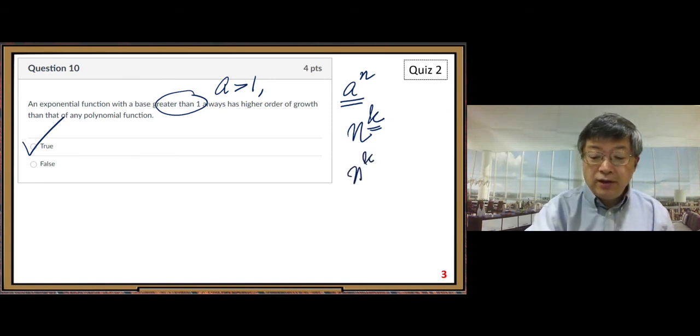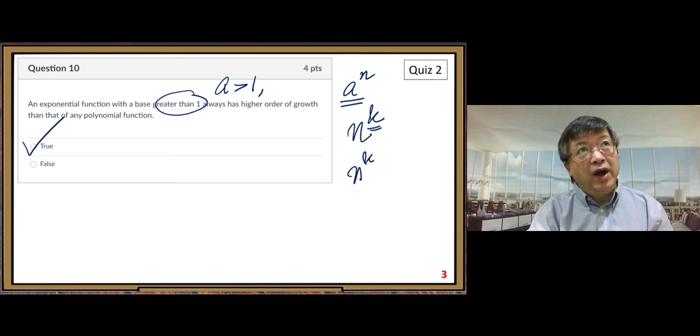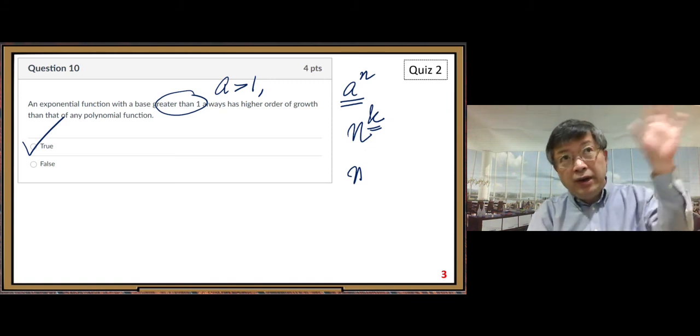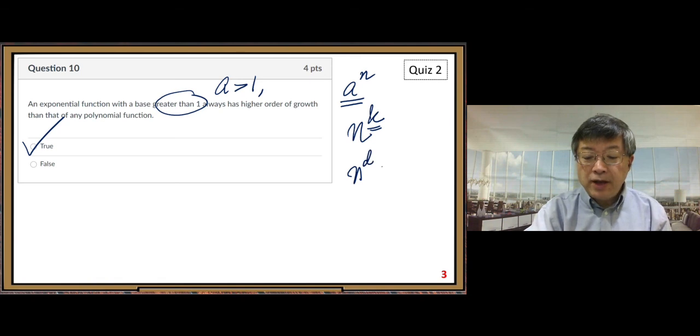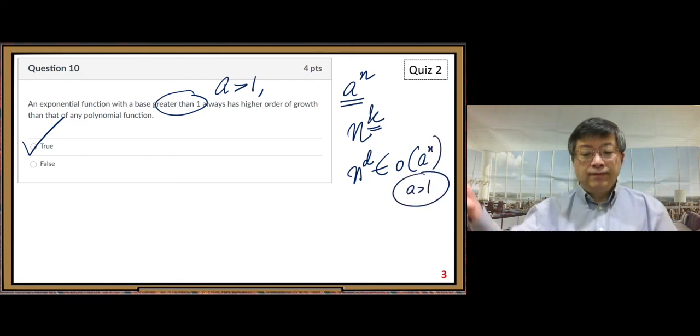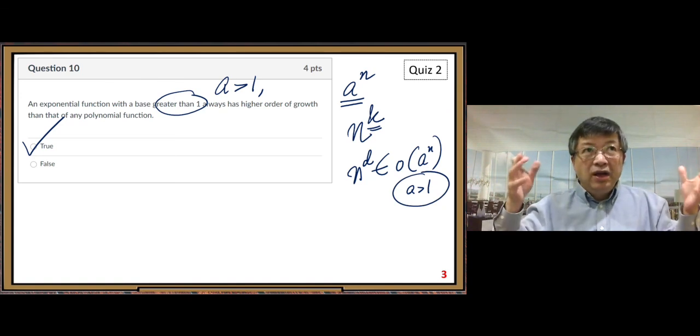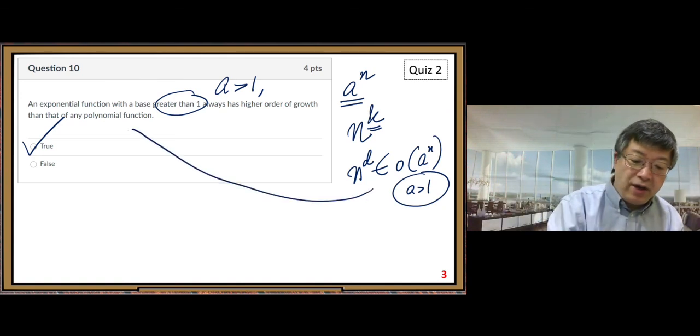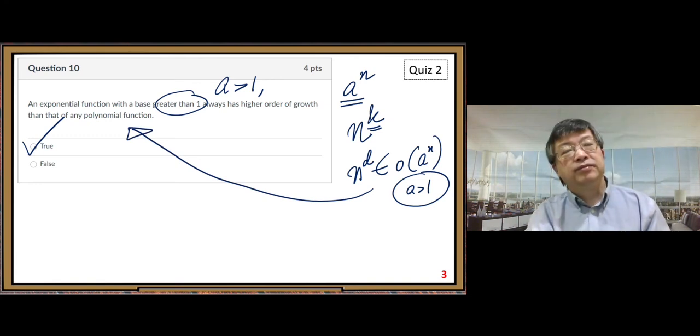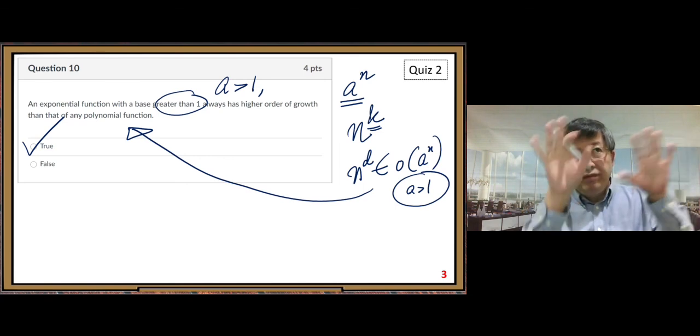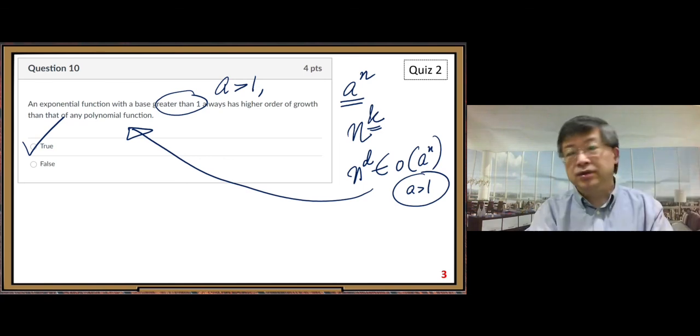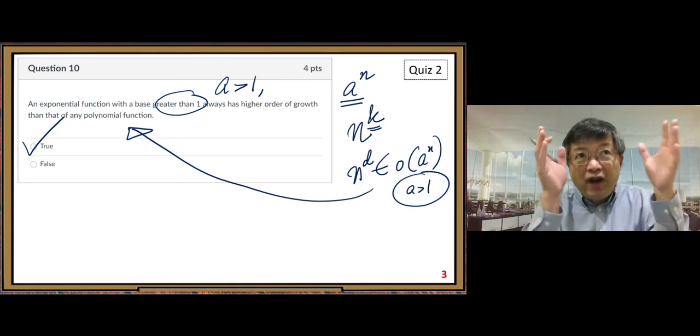So we know n to the k. Although we write n to the d in our notes, we use d, that's okay. Belongs to little o of a to the n, with a greater than 1. So this result gives the statement here. So you need to be familiar with all the results. Although you can go back to look at the notes, you need to find the right place.